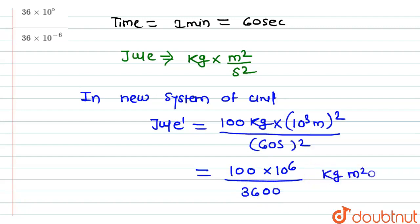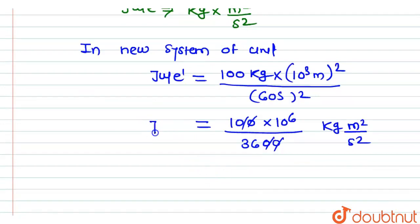After cancellation, the new unit Joule dash will be equal to 10 raised to the power 6 divided by 36, and kg meter square by second square is equal to Joule.